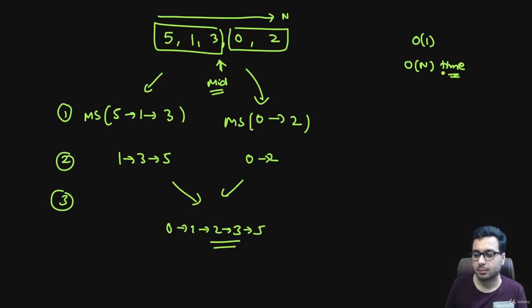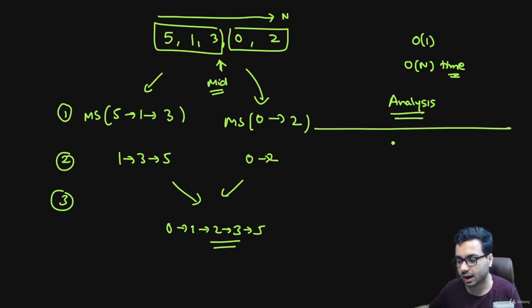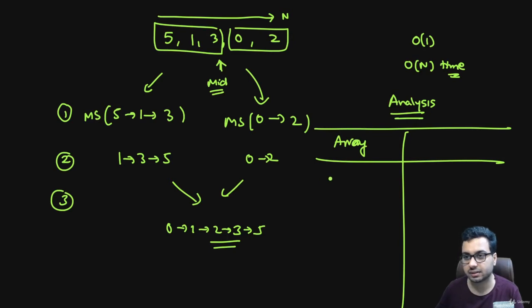If we talk about the overall complexity of merge sort, do you think it will change? Let us do an analysis between the overall complexity of merge sort on a linked list and on an array. In array, calculating midpoint takes how much time? O(1) time. Here it takes O(n) time.